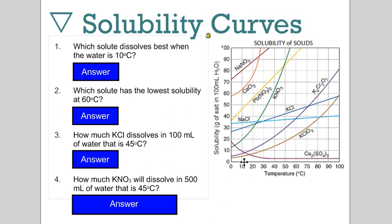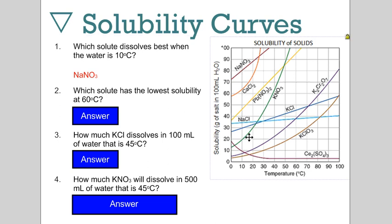Number one, which solute dissolves best when water is 10 Celsius? Look at 10 Celsius, which solute can you put the most of in 100 grams of water? Sodium nitrate appears to be our answer. Which solute has the lowest solubility at 60 Celsius? I look at my x-axis, find 60 Celsius, and I see cerium sulfate.